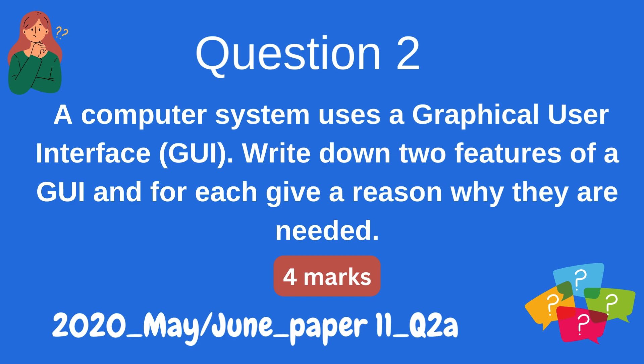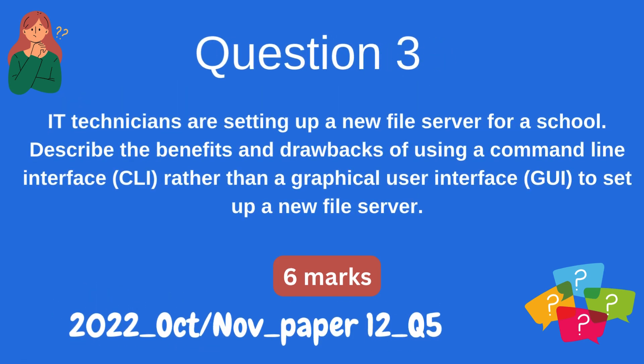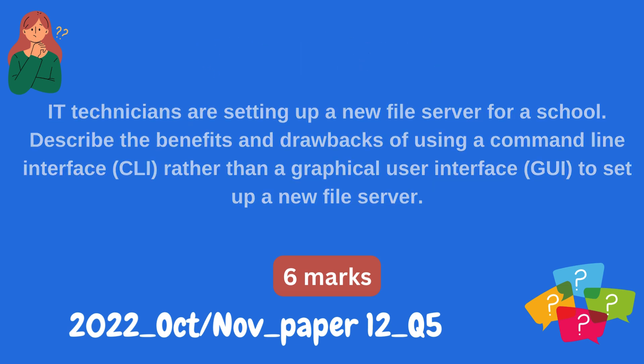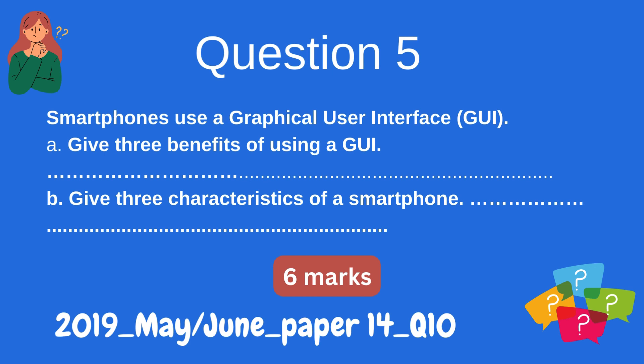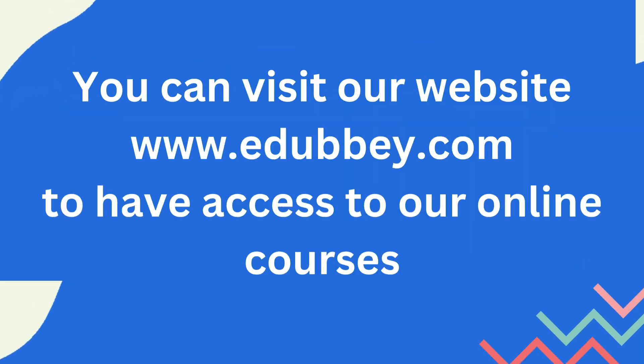Question 3: IT technicians are setting up a new file server for a school. Describe the benefits and drawbacks of using a command-line interface, CLI, rather than a graphical user interface, GUI, to set up a new file server. Question 4: Describe the differences between using a graphical user interface, GUI, and a command-line interface, CLI. Question 5a: Smartphones use a graphical user interface, GUI. Give three benefits of using a GUI. Question 5b: Give three characteristics of a smartphone. You can visit our website www.edu.bay.com to have access to our online courses. Thank you.